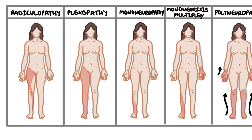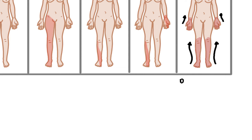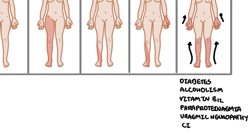Because Charcot-Marie-Tooth disease is a sensory and motor polyneuropathy, it is important to think about other differential diagnoses, including diabetes, alcoholism, vitamin B12 deficiency, paraproteinemia, uremic neuropathy, and chronic inflammatory demyelinating polyneuropathy.